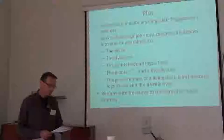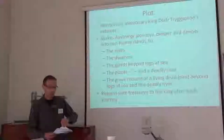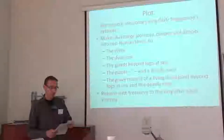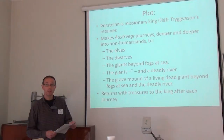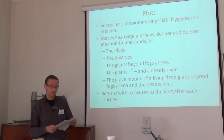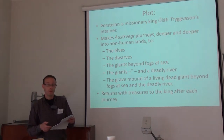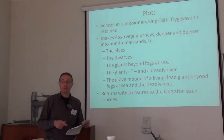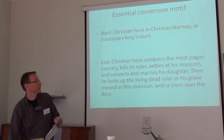So here's the plot. Thorstein is missionary king Óláfr's retainer, and he makes eastward journeys deeper and deeper into non-human lands — to the elves, to the dwarves, to the giants, beyond fogs at sea, and then to more giants, also beyond a Deadly River, even further away, and then finally to a grave mound of a living dead giant beyond the fogs at sea and the Deadly River. And after each journey, the hero returns to the king with the treasures that he obtained.